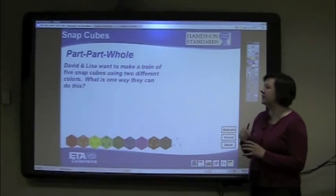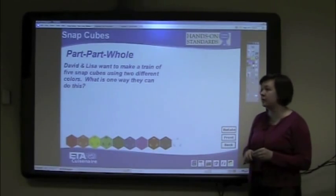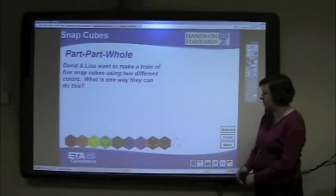In this context, David and Lisa want to make a train of five snap cubes using two different colors. We have our snap cubes here.